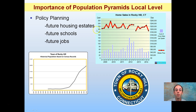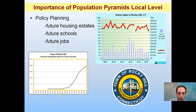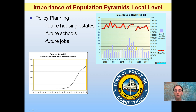The importance of population pyramids at the local level: for policy planning, future housing estates, future schools, future jobs. Here's the town of Rocky Hill with historic populations based on census records. We'll notice here back in 1850 to about 1930 it was very stable and very low, and then this rapid, exponential increase. Looking at more current terms from 2009 to 2014, we're looking at median house price and the count of home sales per quarter. This can help us indicate trends of what may occur, whether homes are cheaper or expensive, whether they're trending up or trending down. All these are involved with population pyramids.